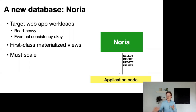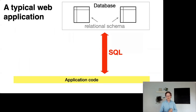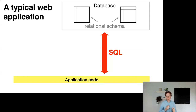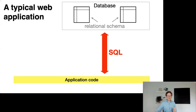NARIA, to the application code, looks just like an ordinary SQL database in terms of interface. It's eventually consistent, so transactions you'd expect in MySQL or Oracle are not supported, but SQL queries with typical joins, aggregations, selections, and filters are supported. The storage layout follows a relational schema, just like a normal SQL-based relational database.